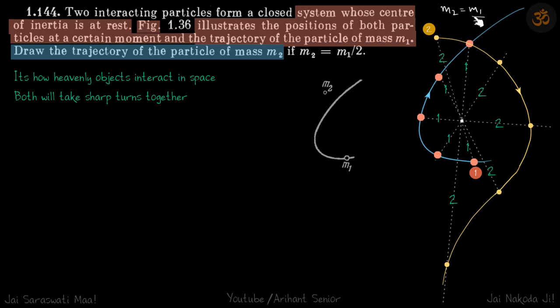It's given that m1 is heavier, so I have drawn it bigger. This is smaller and it is double the mass of m2, which means the center of mass will divide the line joining into the ratio of one is to two. Center of mass will be nearer to m1.